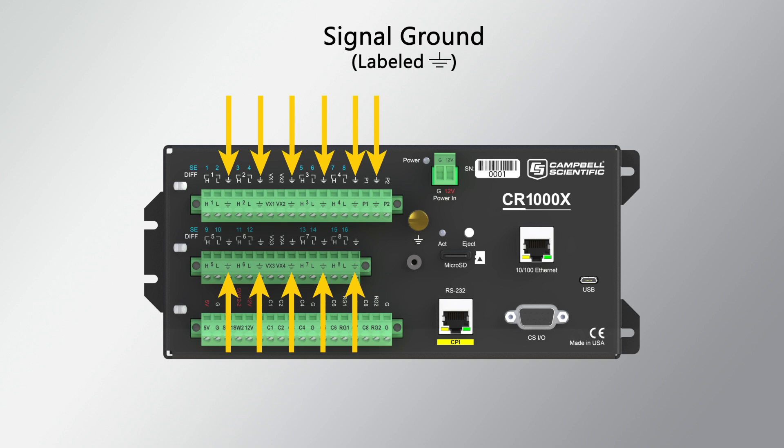Signal ground, labeled with the ground symbol, provides a reference for single-ended analog inputs, excitation returns, and a ground for sensor shield wires. These are small voltage signals with low current flow and need to be protected from other parts of the system that could interfere with the measurement. Signal ground terminals have a slightly higher resistance than power ground terminals, so any unwanted current flow is directed to the ground lug instead of into the voltage measurement section of the wiring panel.